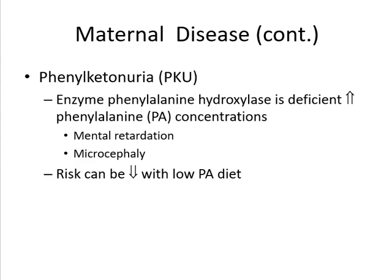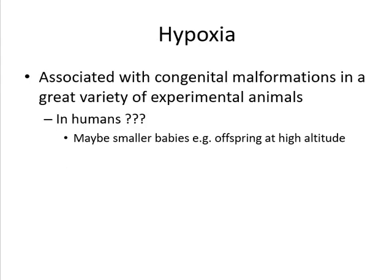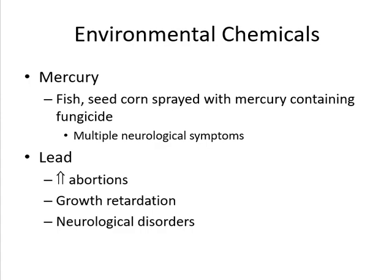Hypoxia is associated with malformations in a great variety of experimental animals, but has not been fully examined in humans. Smaller head circumference may be an example of hypoxia in high-altitude areas. Environmental chemicals are also considered teratogenic, including lead and mercury. Mercury may lead to multiple neurological symptoms, and lead may lead to a high percentage of abortions, neurological disorders, and growth retardation.